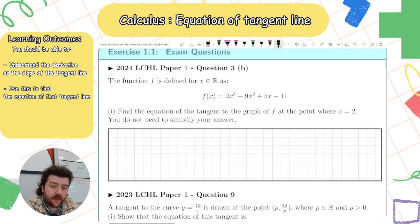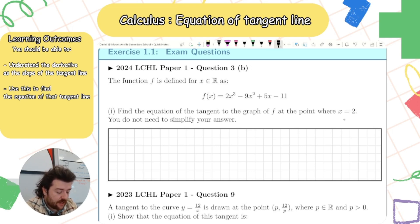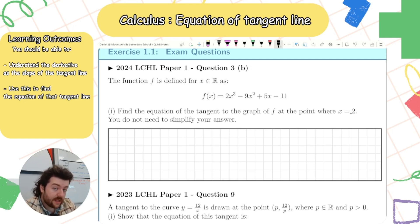Let's look at this example from 2024. The function f is defined for x as real numbers: f(x) = 2x³ − 9x² + 5x − 11. Find the equation of the tangent to the graph at the point x = 2. For the equation of a line I need a point and a slope. I don't have my y-coordinate, so I need to find the corresponding y-coordinate.